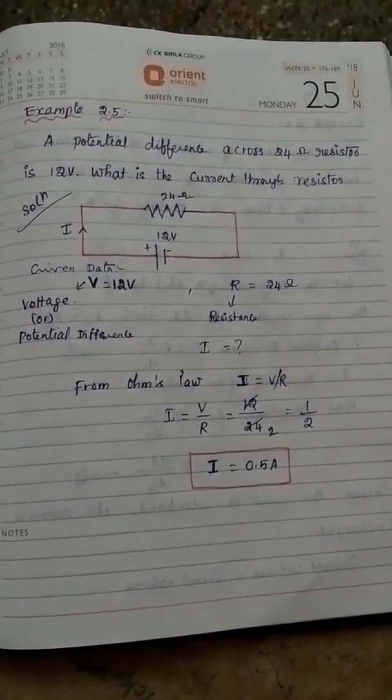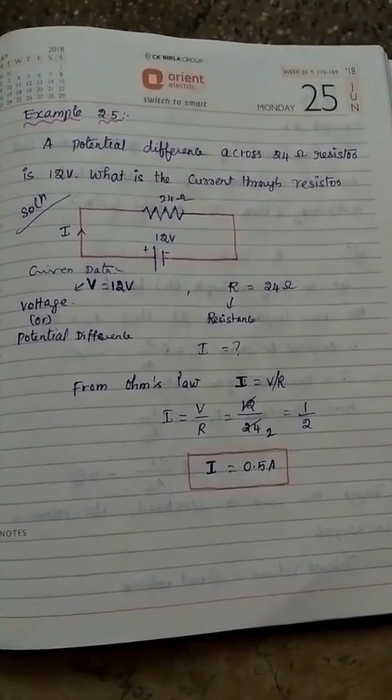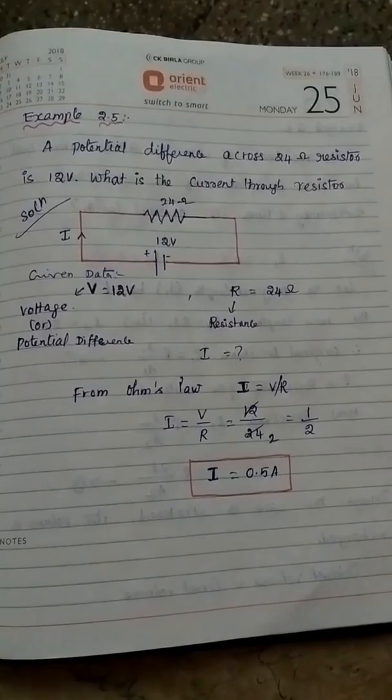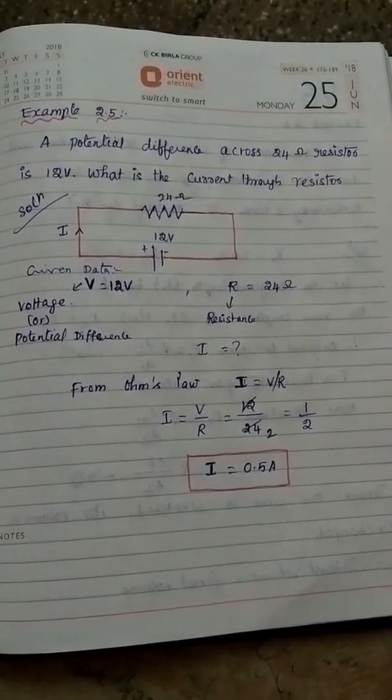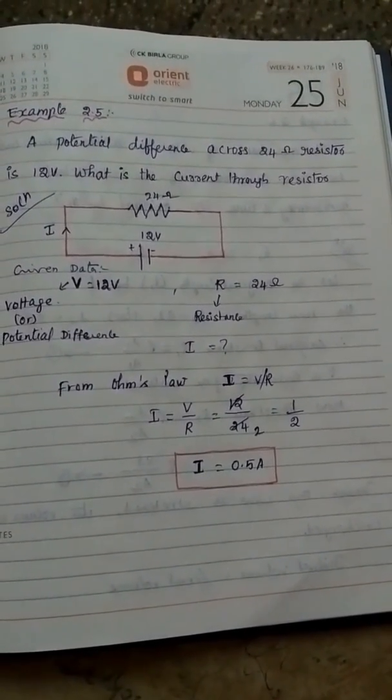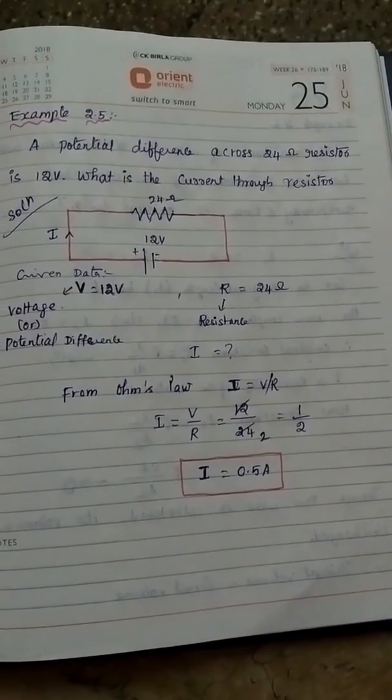From Ohm's law, I equals V divided by R. We have to calculate the current, so we apply Ohm's law: I equals V by R.